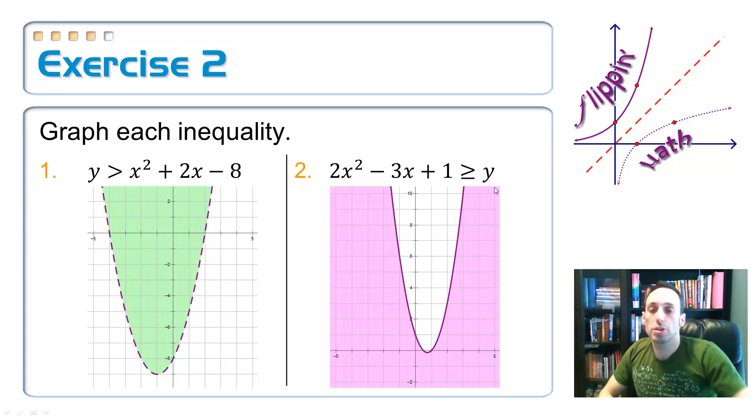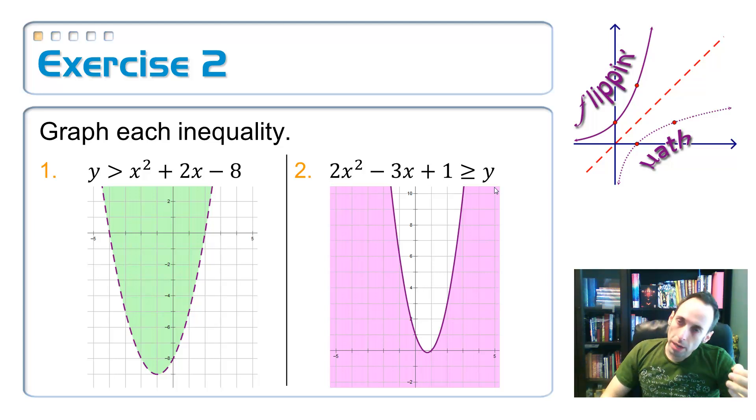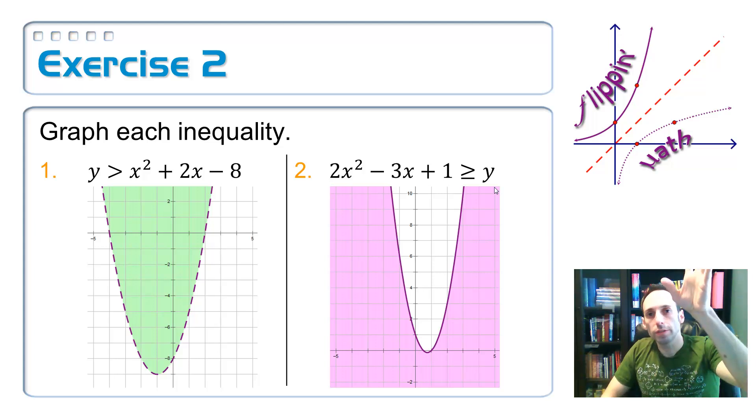So, that concludes the first objective. Graphing quadratic inequalities with two variables. You're first going to graph the boundary parabola. Solid or maybe it's dashed. And then figure out what part of it you're going to shade. Either up above or down below. Alright, see you in part 2.